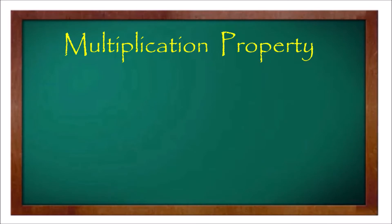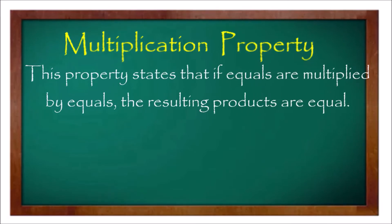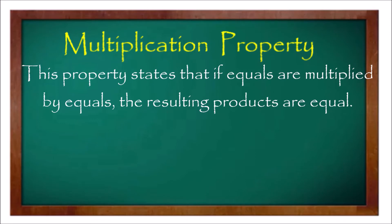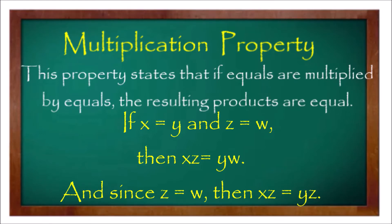The last property of equality is the multiplication property. This property states that if equals are multiplied by equals, the resulting products are also equal. If x equals y and z equals w, then x times z equals y times w. And since z equals w, then x times z equals y times z.